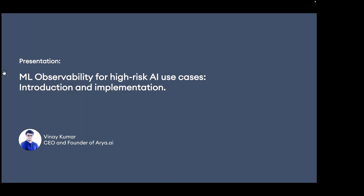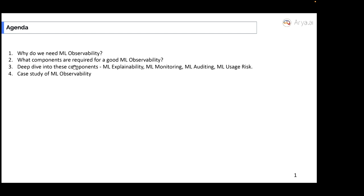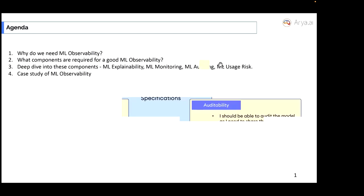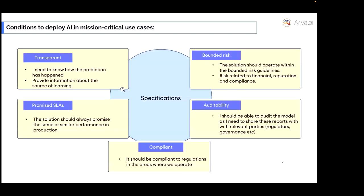That's where ML observability can help stakeholders. ML observability is a separate layer that works in parallel with the MLOps layer — while MLOps focuses on all things related to ML, ML observability primarily focuses on model governance, model explainability, and model auditability. Today's agenda covers why ML observability is required and what the different components of an ML observability framework are.